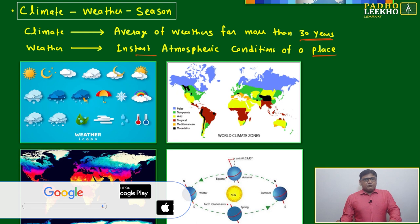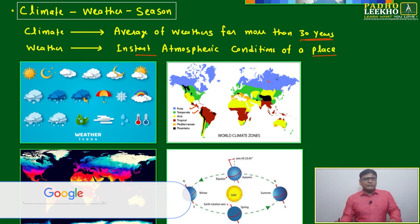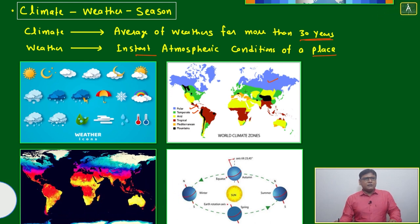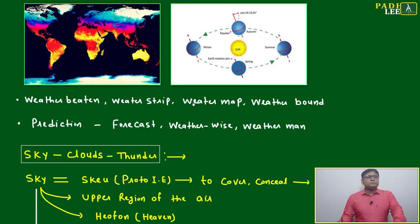You will see the world climate zones in different colors: polar region, temperate region, arid region, tropical region, Mediterranean region, and mountain region. This is the major category of the climatic zones.